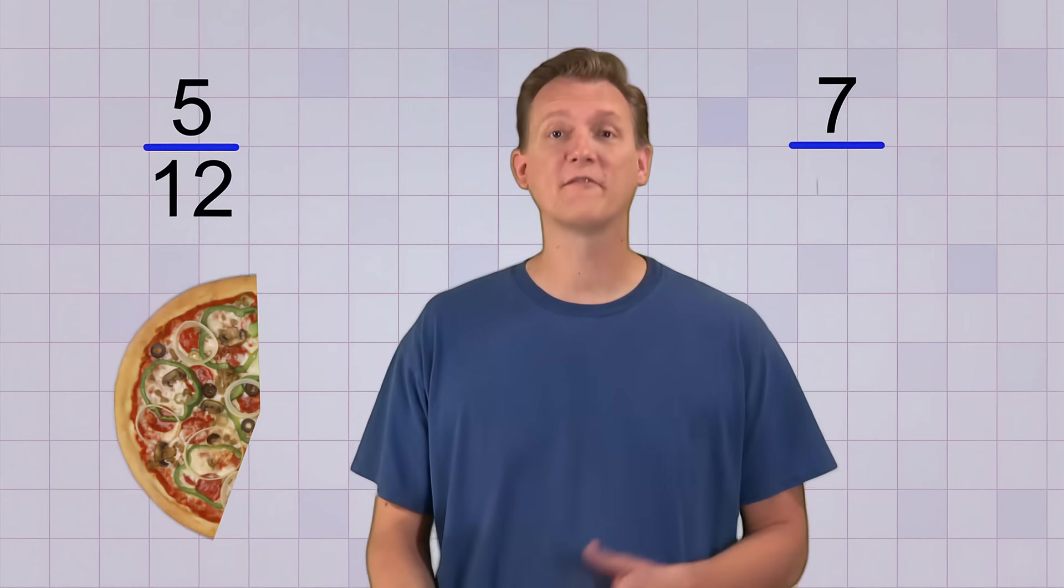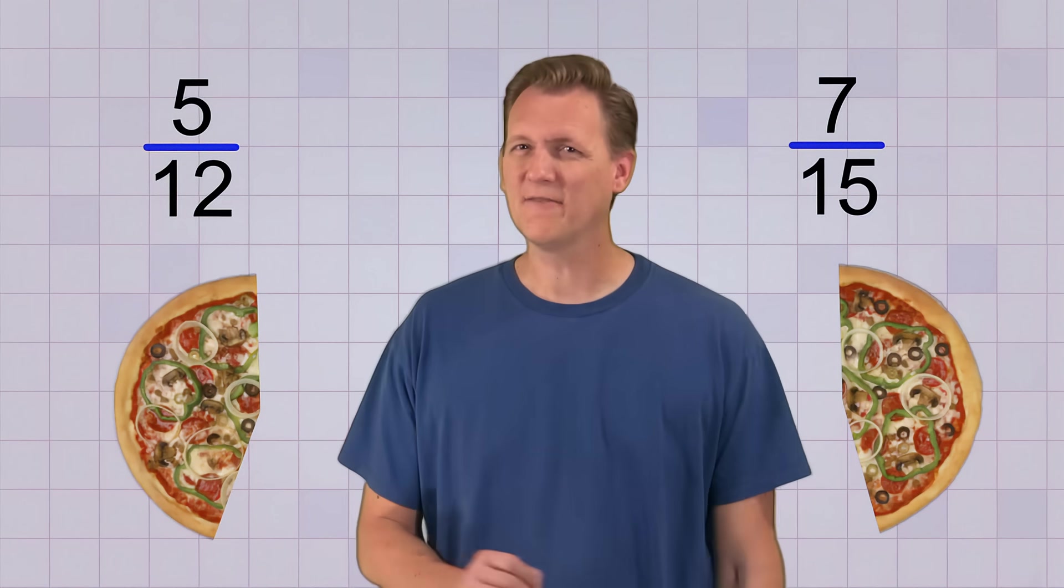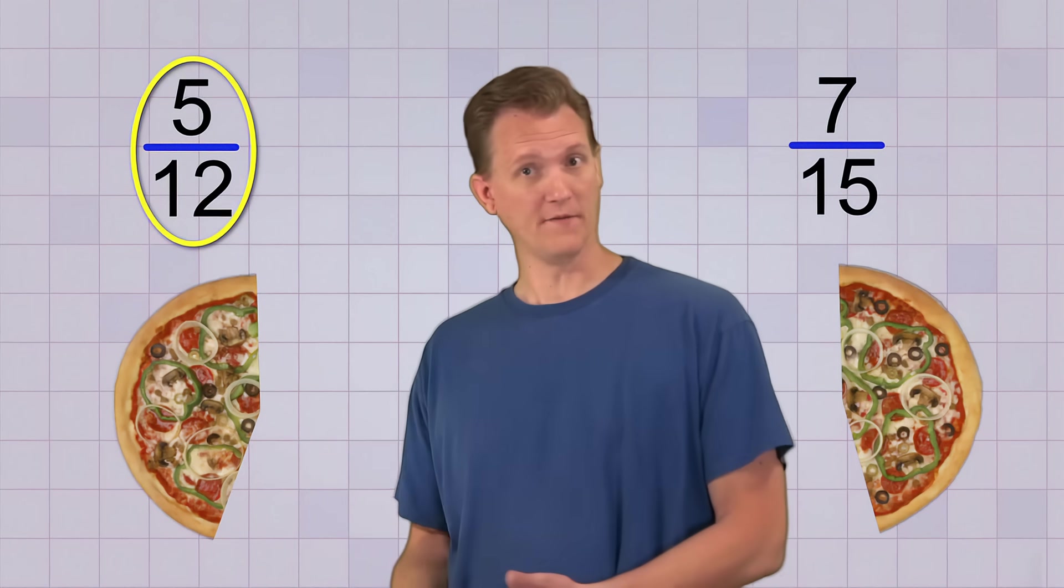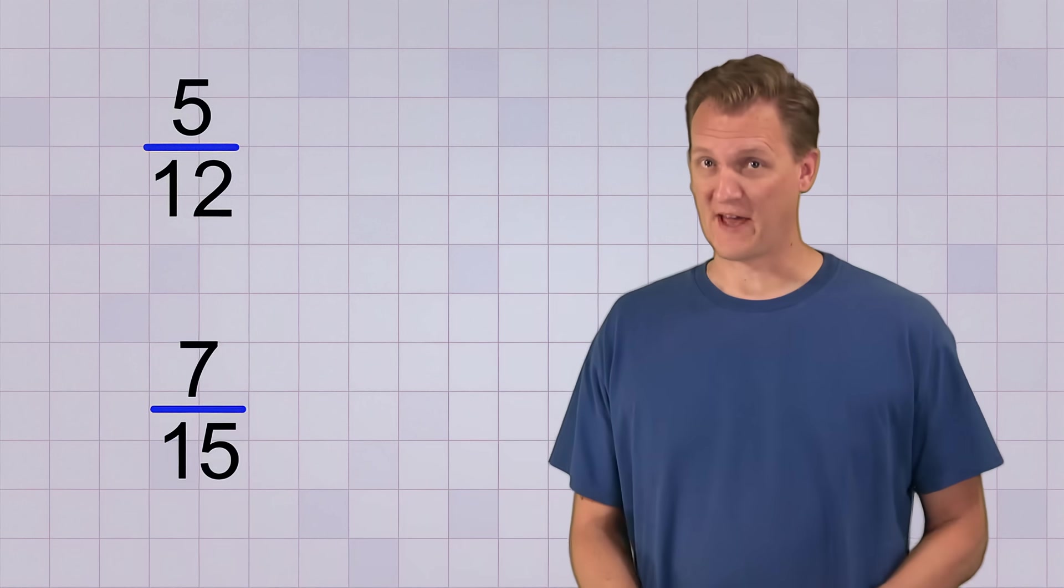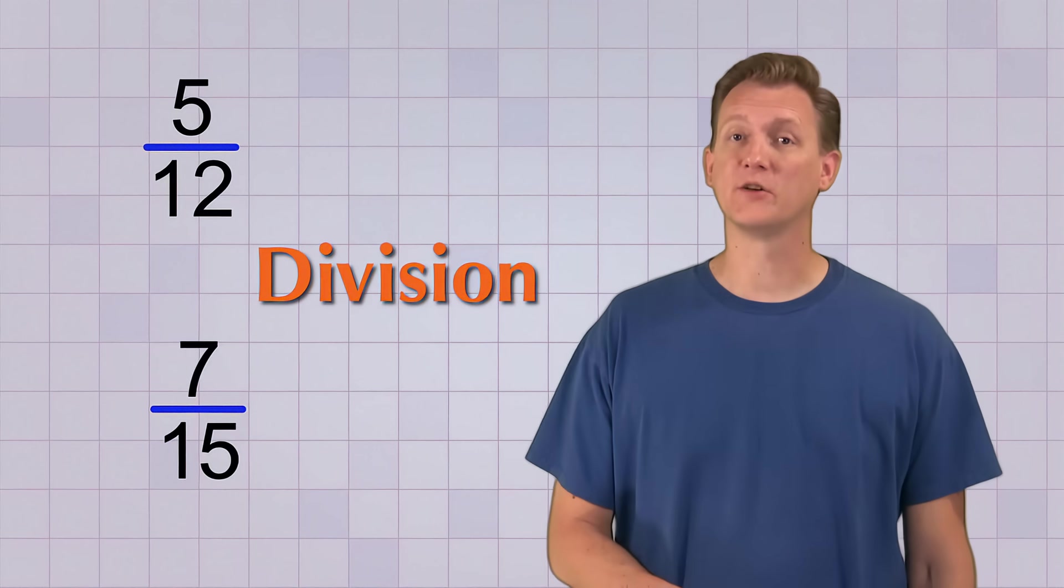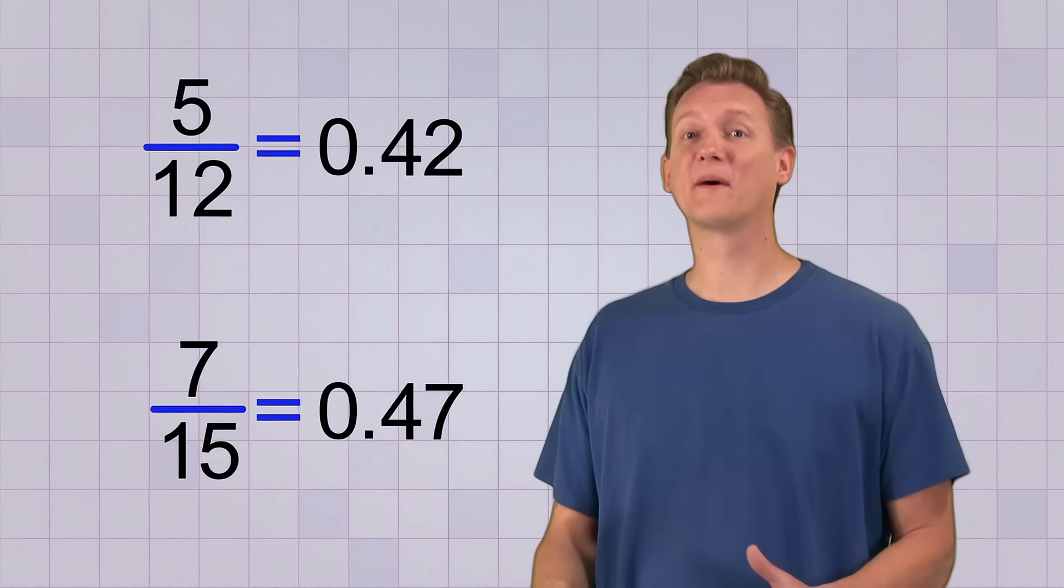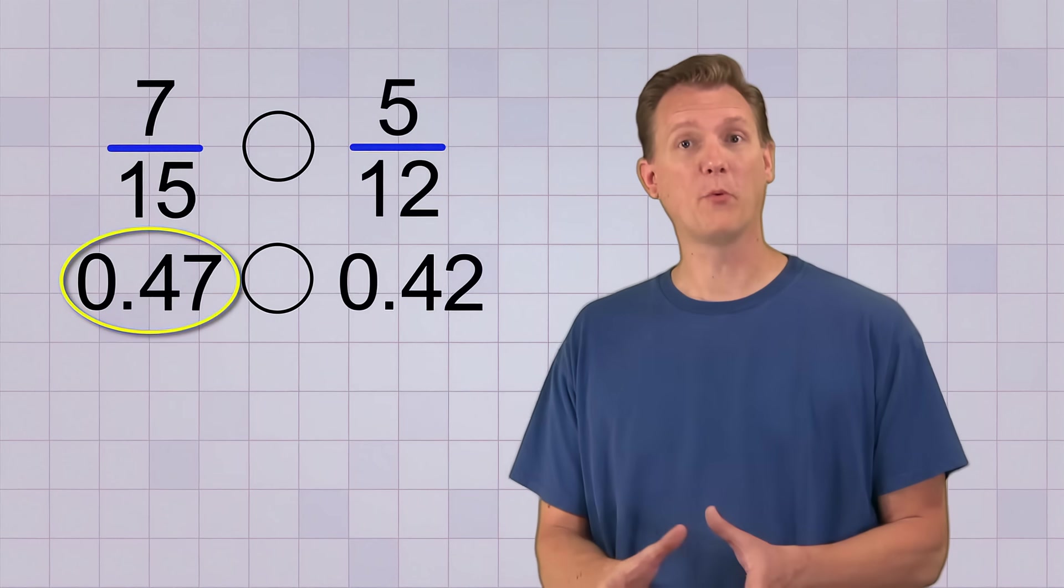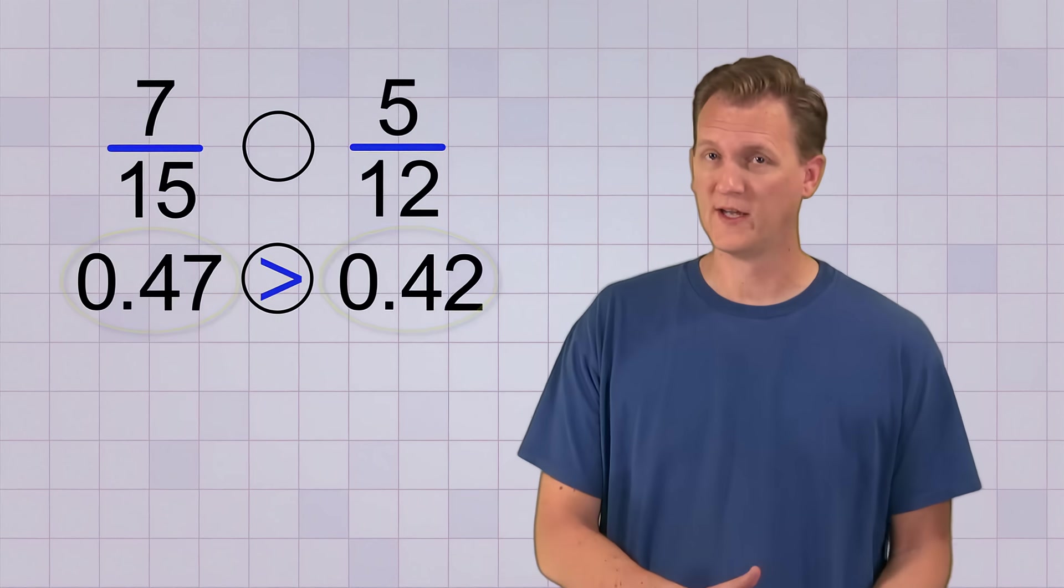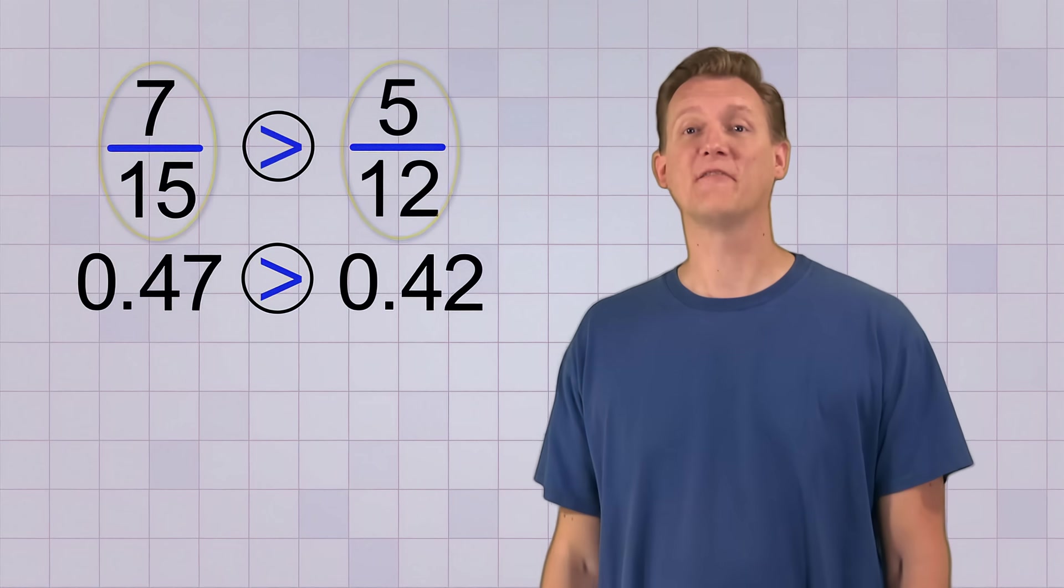For example, let's say I offered to give you either 5 twelfths of a pizza or 7 fifteenths of a pizza. Now you happen to be really hungry, so you want to choose the biggest amount. But it's not very easy to tell just by looking which is bigger, 5 twelfths or 7 fifteenths. This is where decimal values can really help you out. If you convert the fractions to decimals by doing division, it will make it much easier to see which one's bigger. 5 divided by 12 is about 0.42, and 7 divided by 15 is about 0.47. Yep, that makes comparing them MUCH easier. Since 0.47 is greater than 0.42, it means that 7 fifteenths is greater than 5 twelfths. And that means that you'd rather have 7 fifteenths of the pizza.